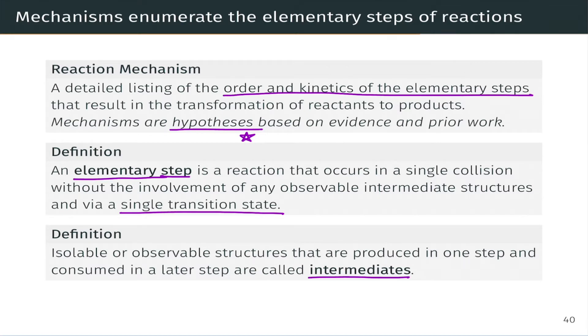Now in energy valleys on a reaction coordinate diagram between the reactants and products, we find observable stable species that are known as intermediates or reactive intermediates. And these are species that are produced in one step and consumed in another. So they don't correspond to the reactants or products but show up kind of in the middle of the mechanism.